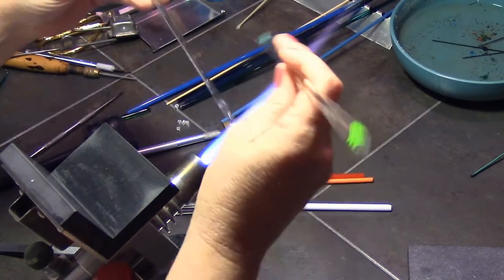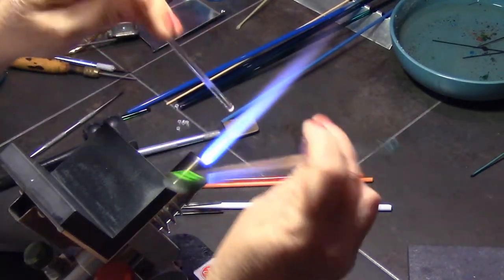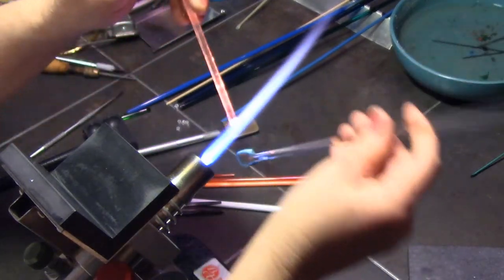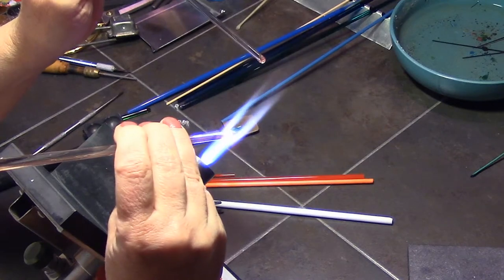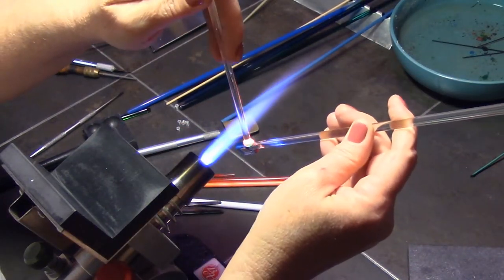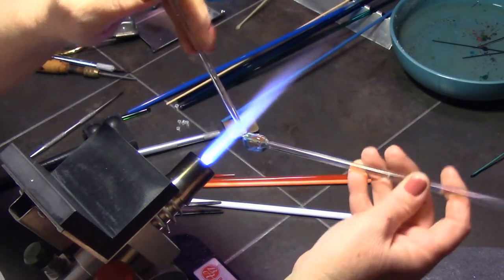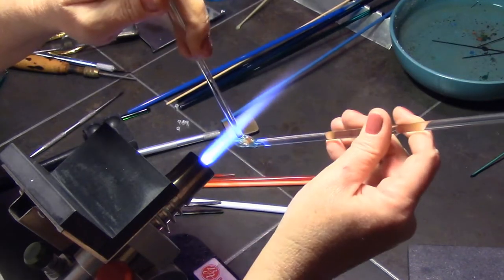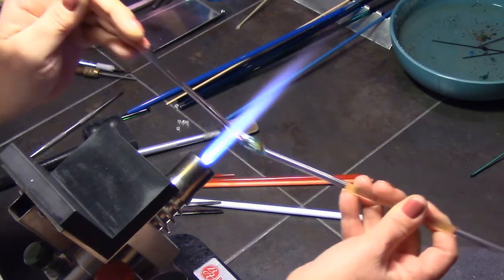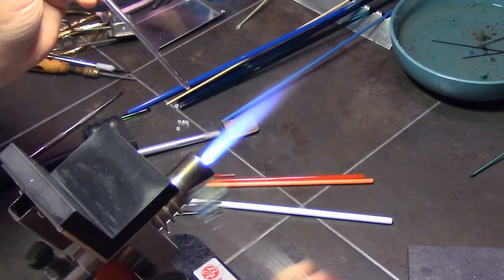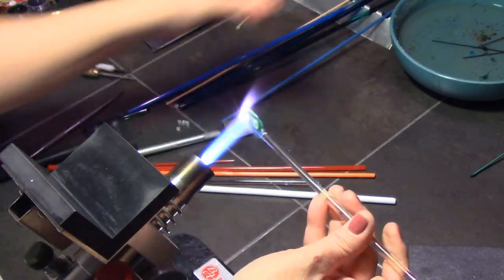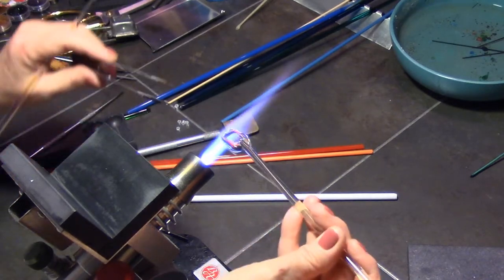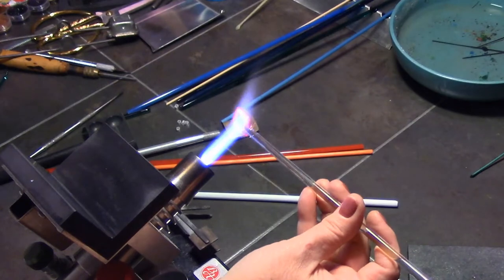And I want to make sure they're fairly melted in because I'm going to encase this whole thing with clear, and I really don't want any bubbles forming. So I'm trying to get it fairly smooth. It doesn't have to be totally melted in, but you really don't want any sharp edges between the clear and the colors that will trap air bubbles. So it's pretty well flattened and together, and I'm going to use clear and encase this whole thing.